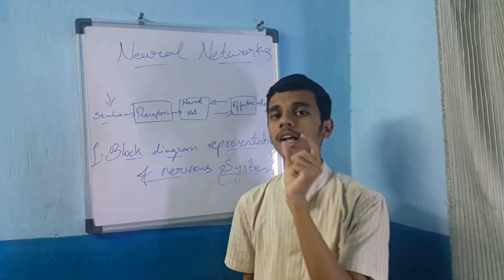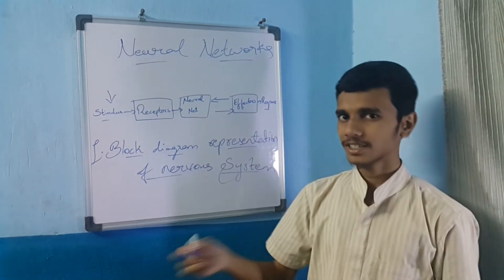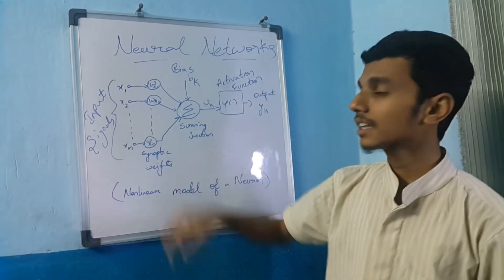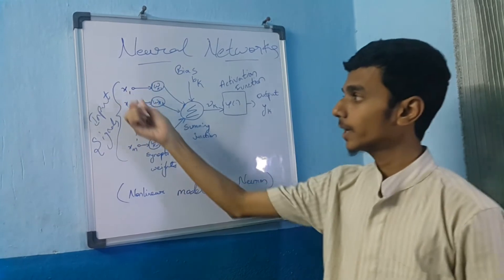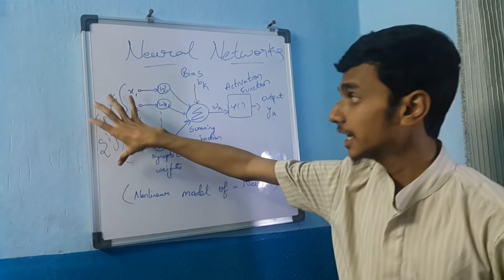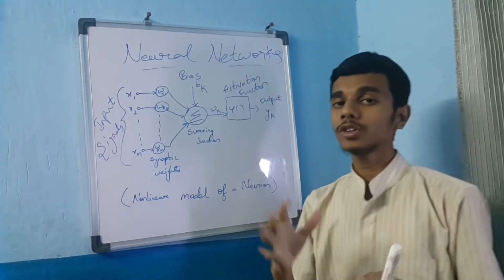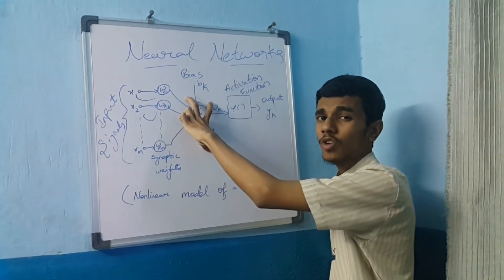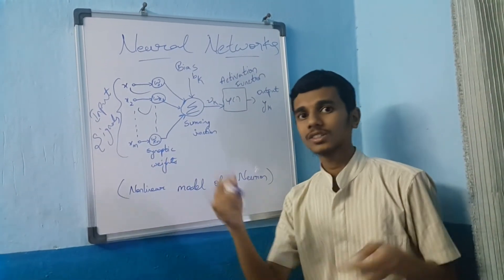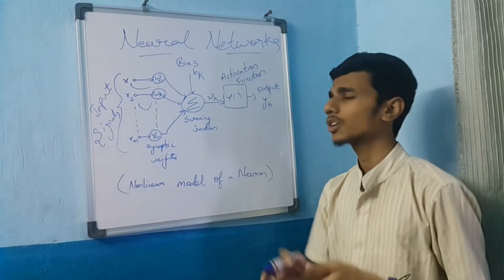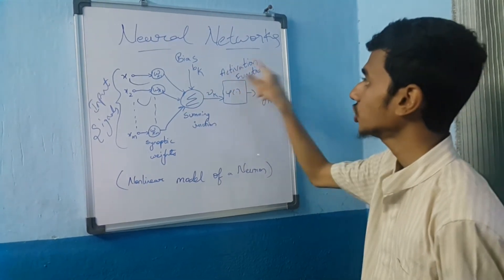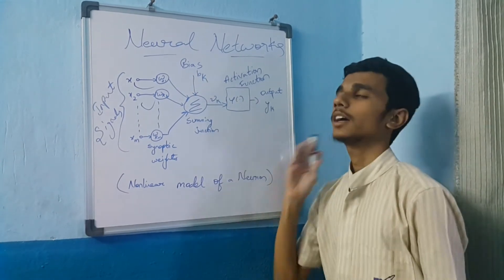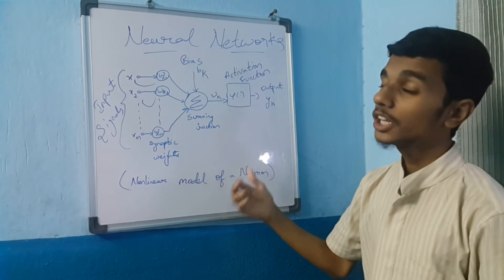This is the nonlinear model of a neuron. These are the input signals x1, x2, up to xm where m goes to infinity. These are the weights of each signal — weight of x1, weight of x2, up to weight of xm. These are connected to a summing junction, which connects all inputs. The summing junction output is then sent to an activation function, which changes the amplitude of the given signals, and the output yk is generalized.